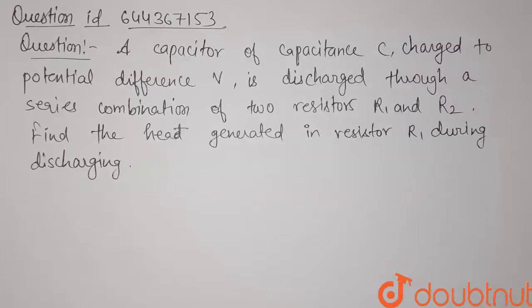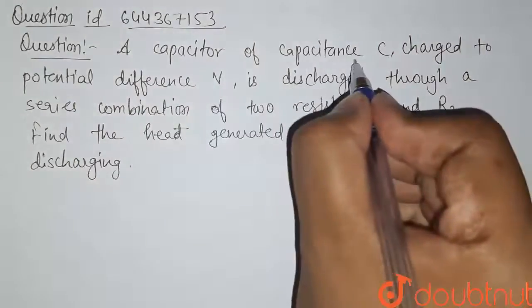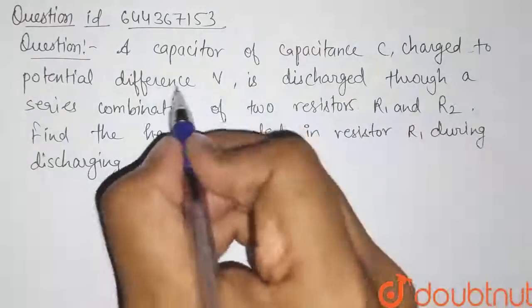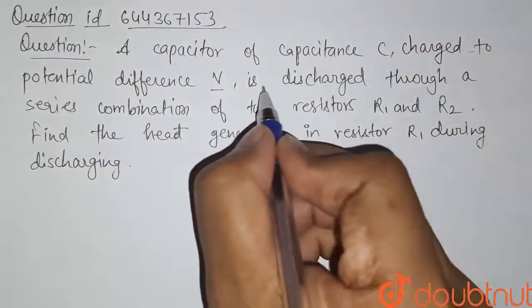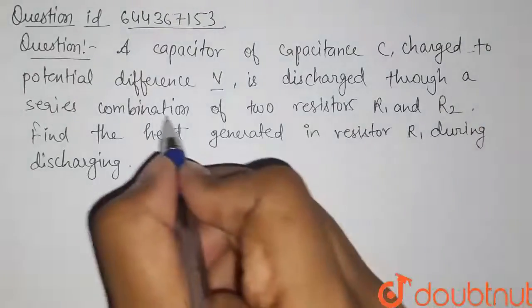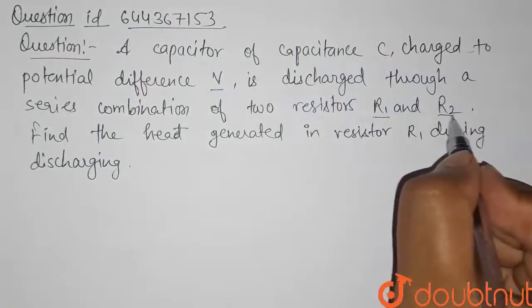Hello students. Here's our question. A capacitor of capacitance C charged to potential difference V is discharged through a series combination of two resistors R1 and R2.